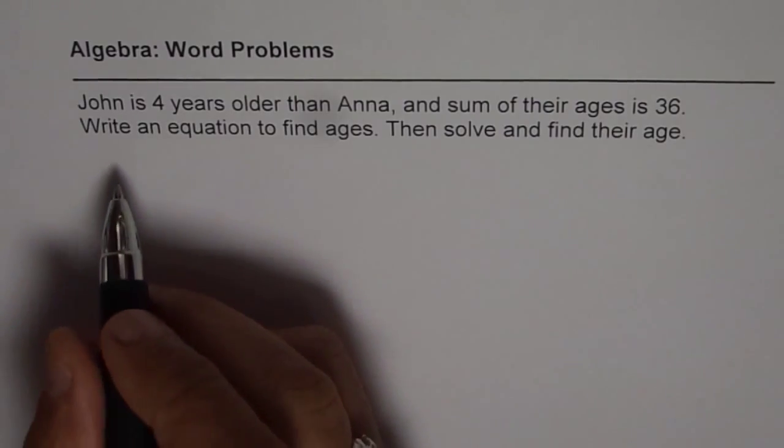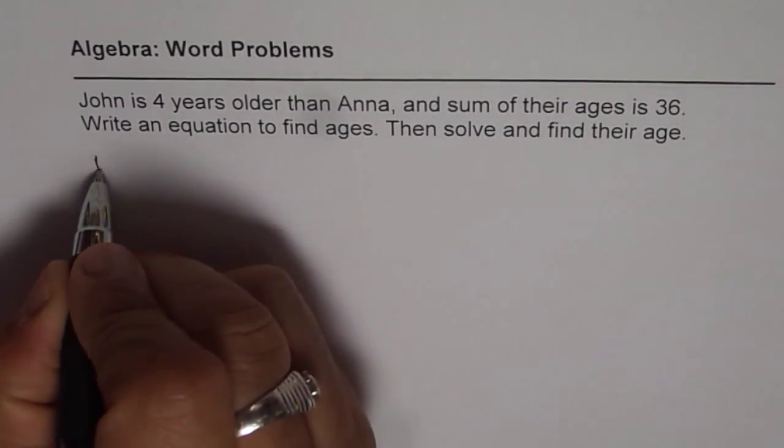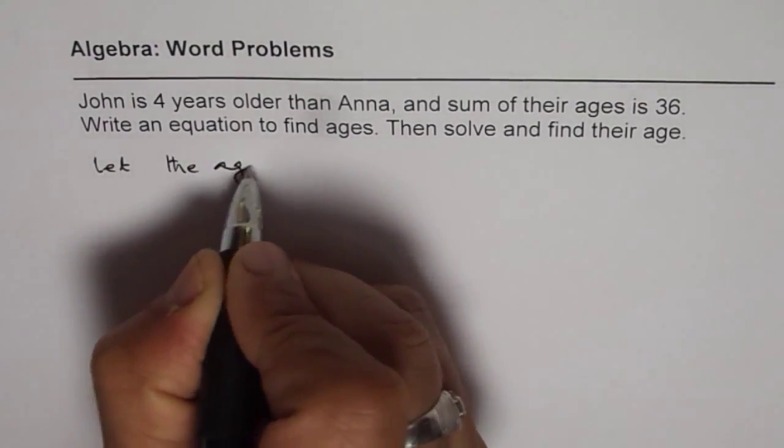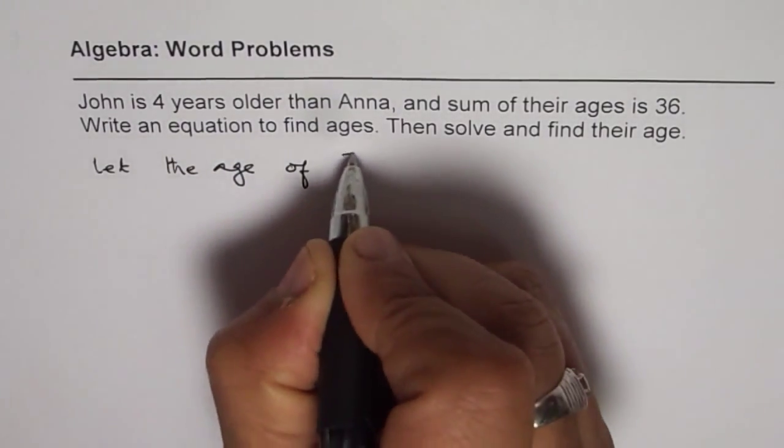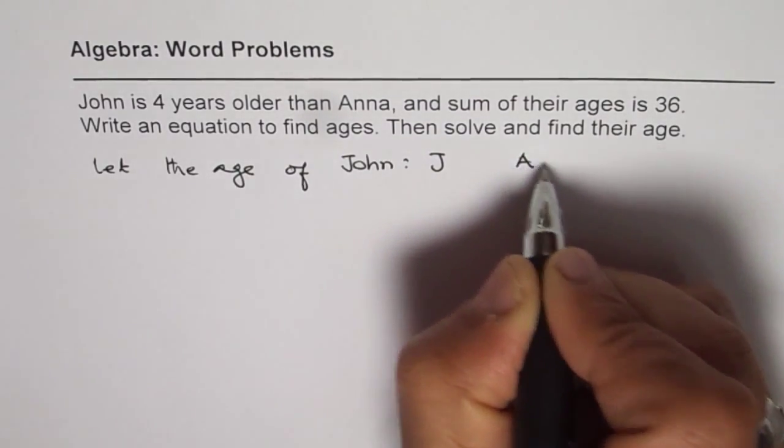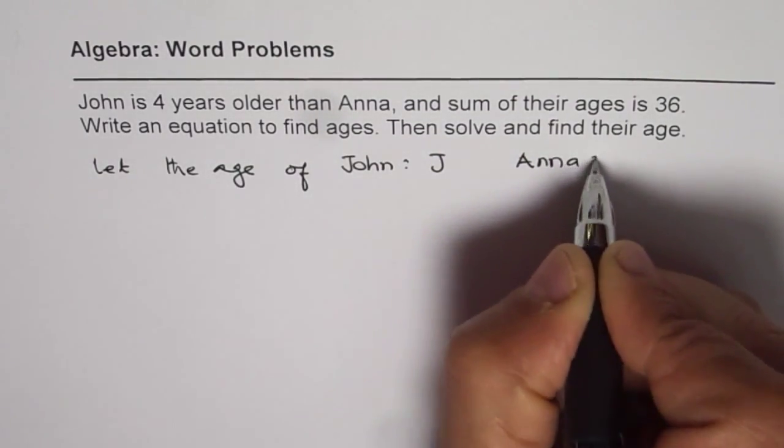Let's begin by defining variables. Let the age of John be J and for Anna be A.